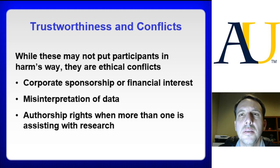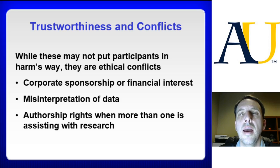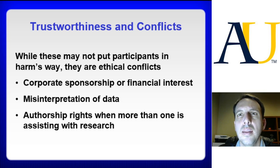Lastly, as far as research requirements and ethical decision-making, it's important that any research published be trustworthy and free of conflicts. It's still possible and acceptable for potential biases to be included, as long as they are disclosed so that readers can understand them. Misinterpretation of data is unethical, as it might lead people to make decisions based on faulty or fraudulent conclusions. Research needs to be trustworthy to be considered publishable, and authorship rights need to be respected.